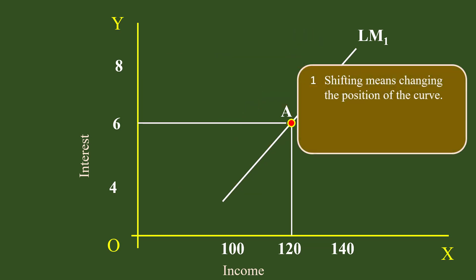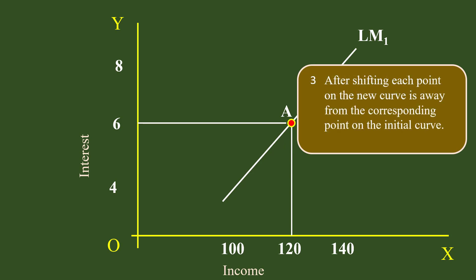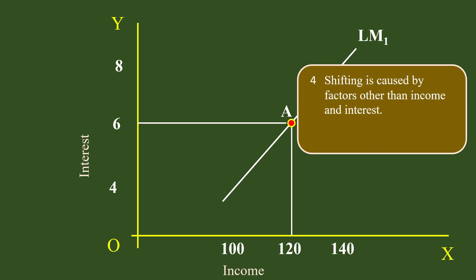The finer points about shifting of the LM curve: 1. Shifting means changing the position of the curve. 2. Shifting can be either to the right or to the left. 3. After shifting, each point on the new curve is away from the corresponding point on the initial curve. 4. Shifting is caused by factors other than income and interest. Each factor which brings about a shift in the IS and LM curves will be discussed elaborately in the next video.